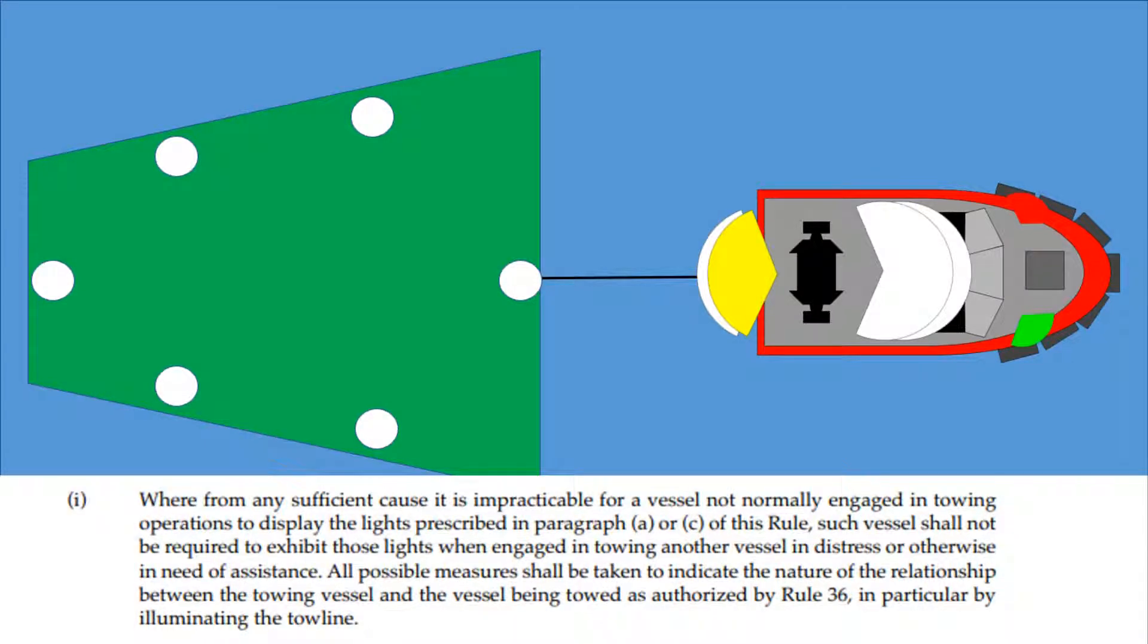Where from any sufficient cause it is impracticable for a vessel not normally engaged in towing operations to display the lights prescribed in paragraph A or C of this rule, such vessel shall not be required to exhibit those lights when engaged in towing another vessel in distress or otherwise in need of assistance. All possible measures shall be taken to indicate the nature of the relationship between the towing vessel and the vessel being towed as authorized by Rule 36, in particular by illuminating the towline.